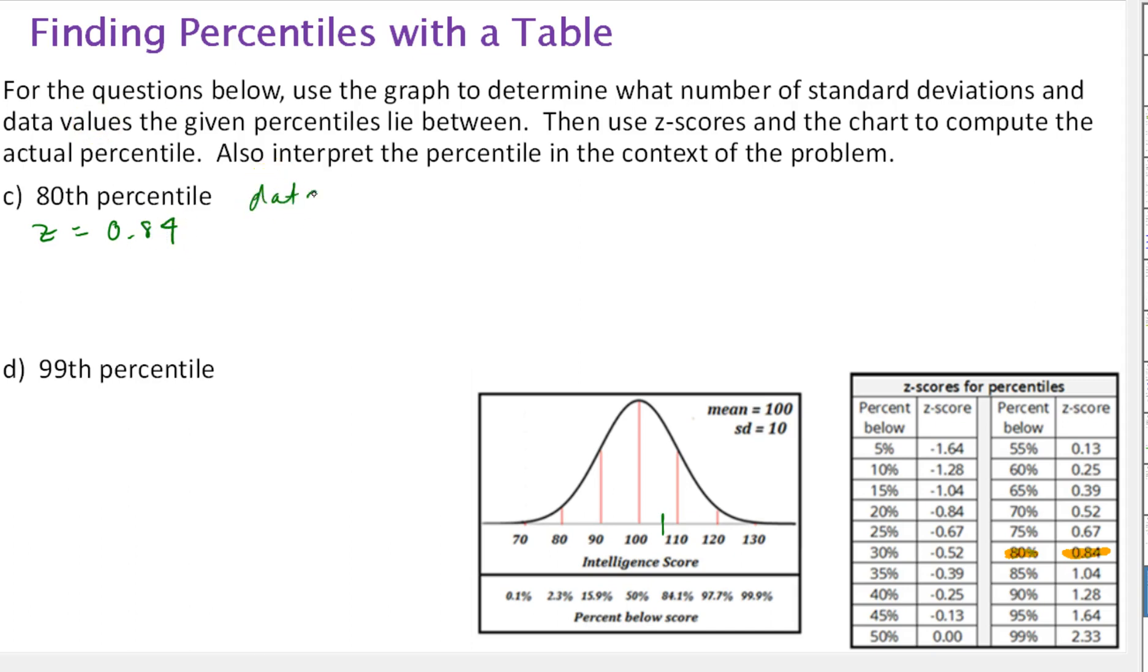And the data value is the mean plus the z-score, the number of standard deviations above the mean times 10. And that multiplies to 8.4. So we have 108.4. So that means 80% of the z-scores lie below 108.4 points.